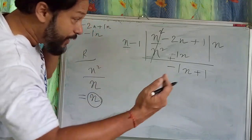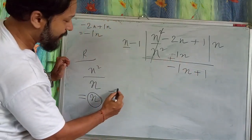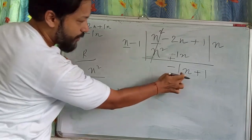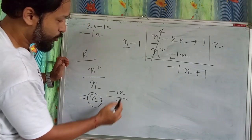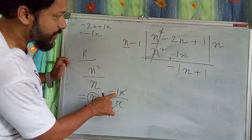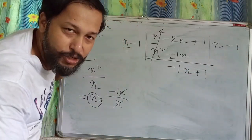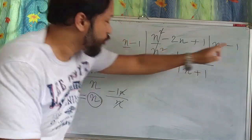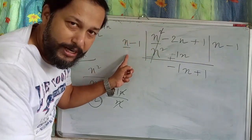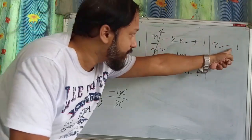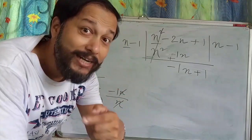Again, we do the same in rough: minus n divided by n. The n's cancel, leaving minus 1. So we write minus 1 in the quotient. Now, by minus 1, multiply both terms: minus 1 times n gives minus n.